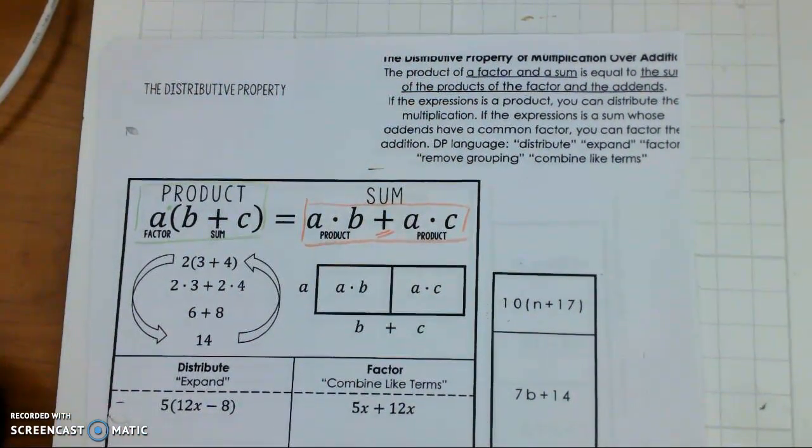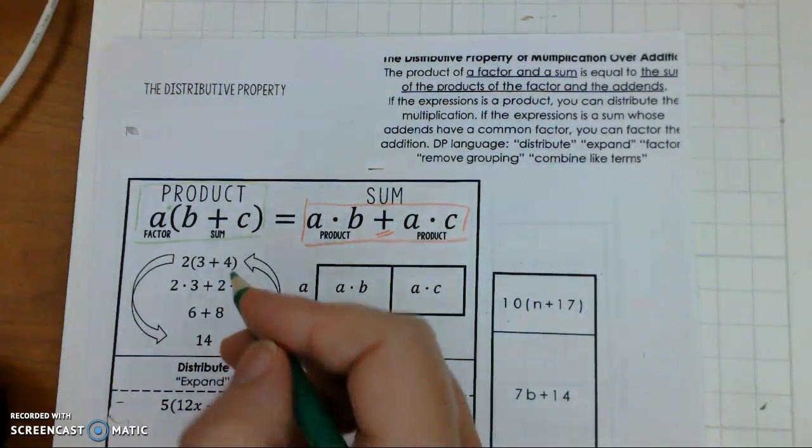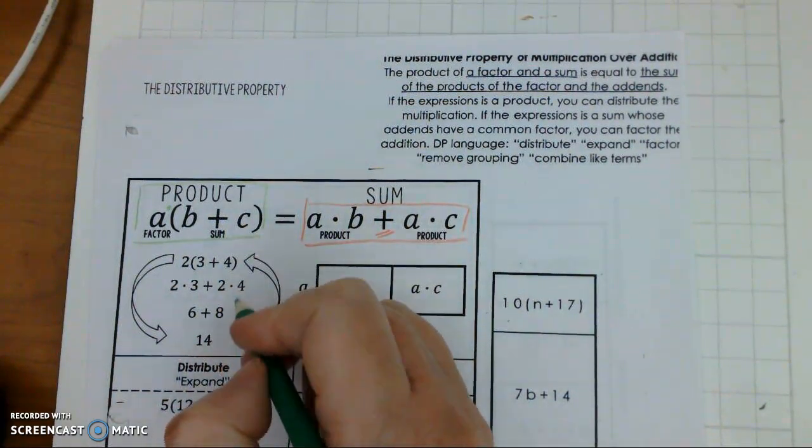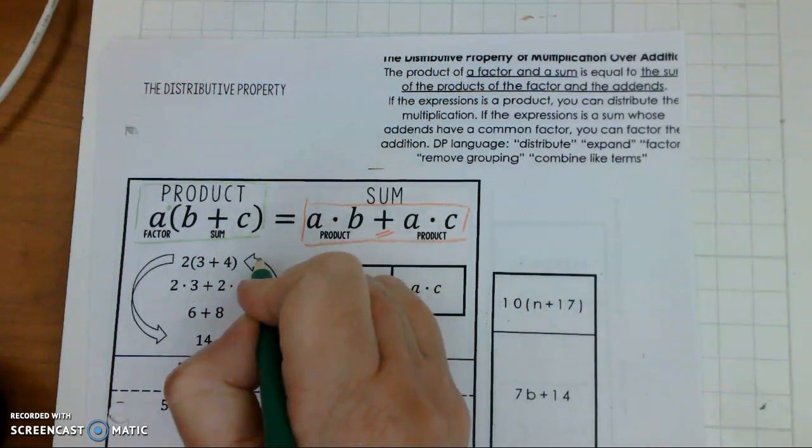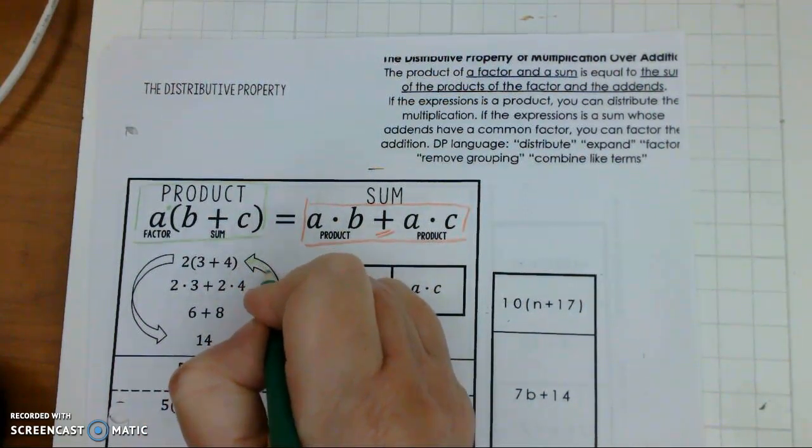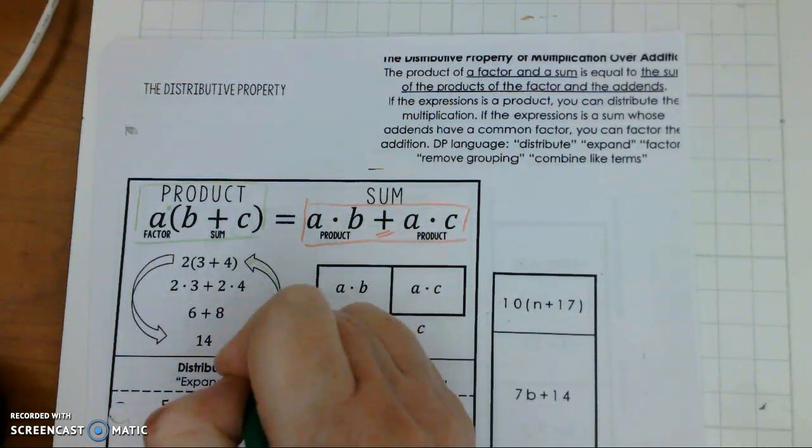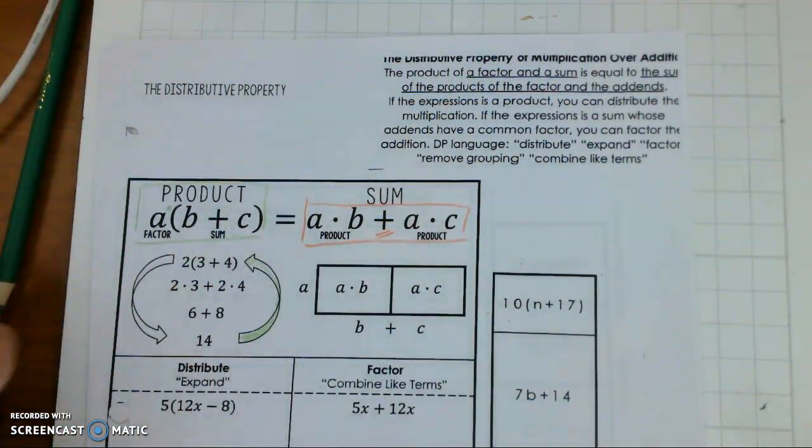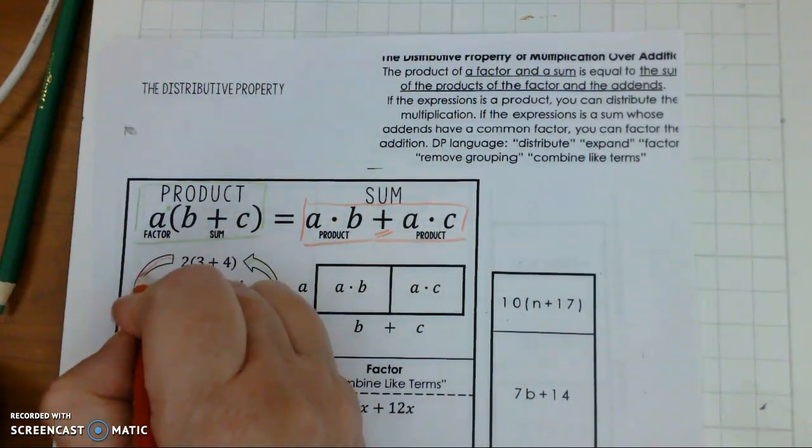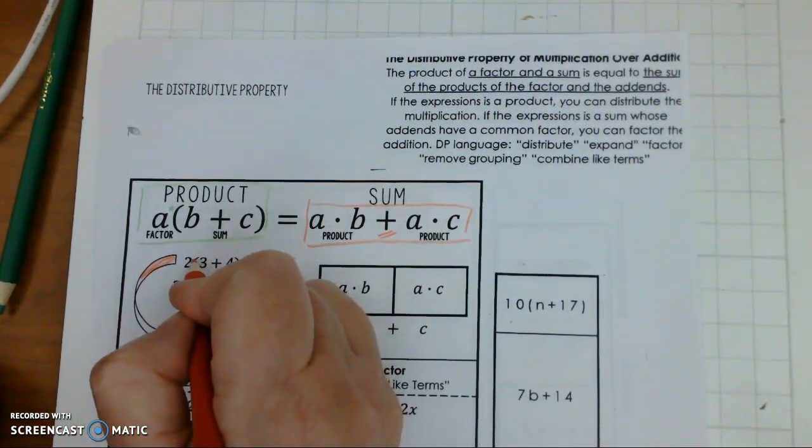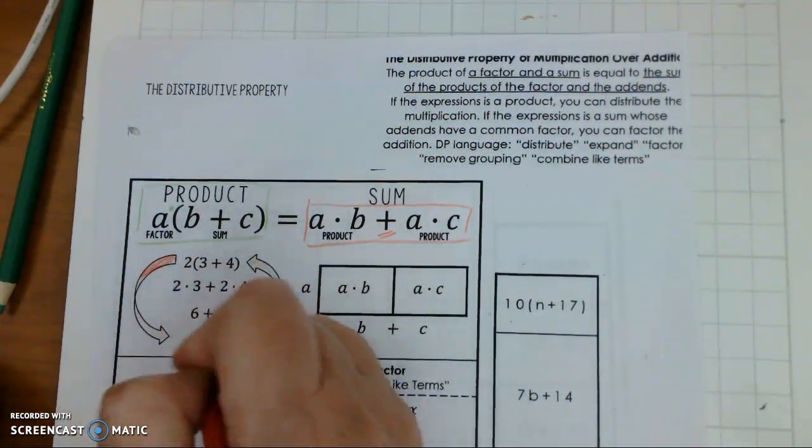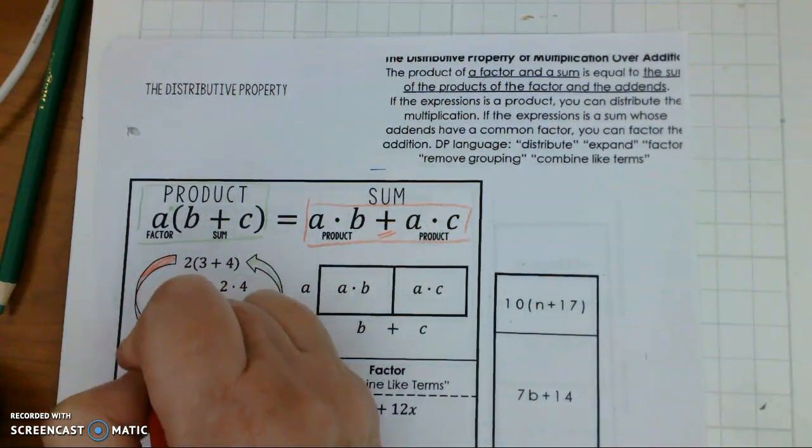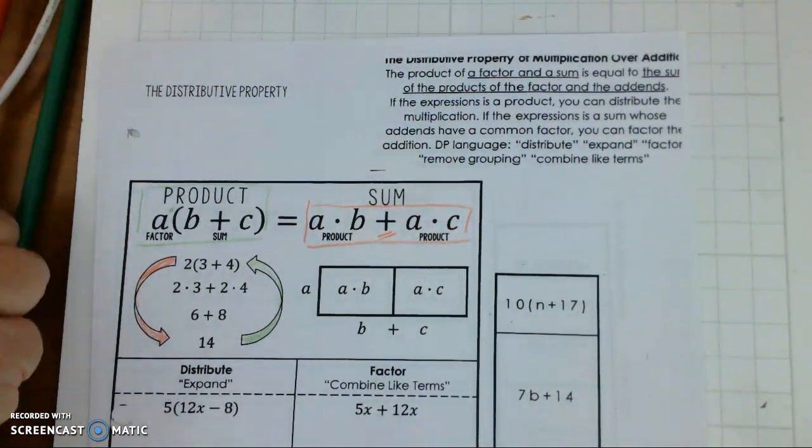Okay, now equivalent expressions, we know that 14 equals 2 times 3 plus 4 in the brackets. And 2 times 3 plus 4 in the brackets equals 14. So they are equivalent expressions.